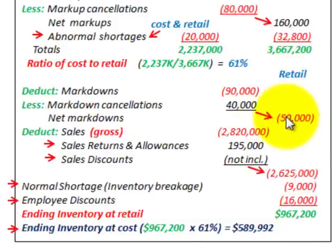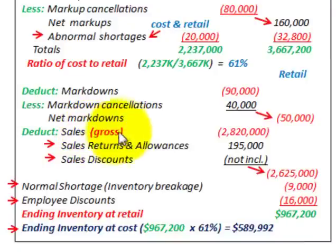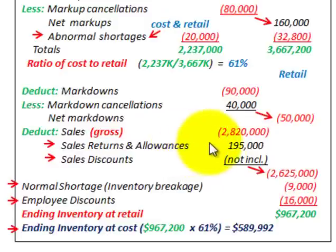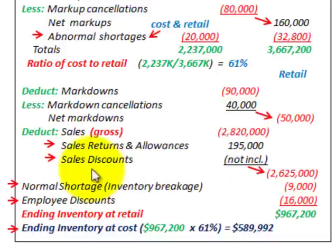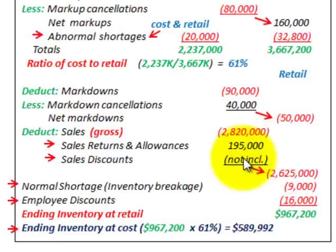To determine ending inventory, we look at our sales — specifically gross sales of $2,820,000. Sales returns and allowances of $195,000 are added back and affect only the retail price column. Sales discounts are not included in either the retail price or cost column — just don't include those.